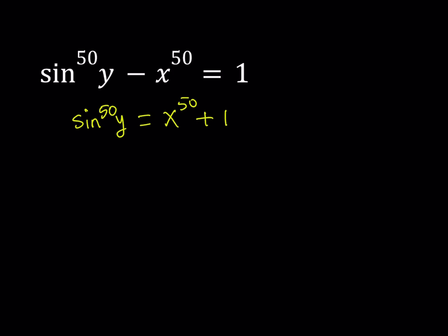Now, if you look at the right hand side carefully, you're going to notice that x to the 50th power, if x is a real number, of course, cannot be negative, right? Because 50 is even. So we can safely say that x to the 50th is always greater than or equal to 0.